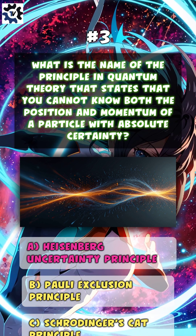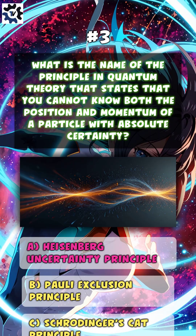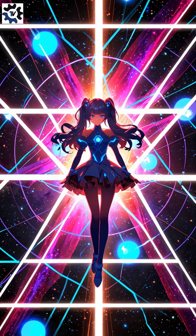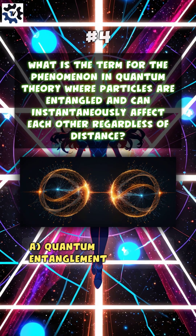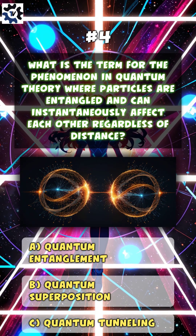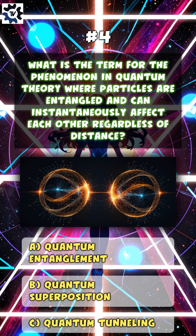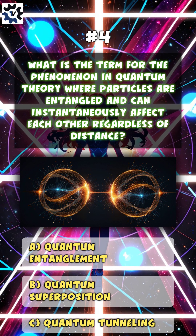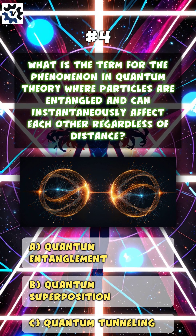The answer is A: the Heisenberg Uncertainty Principle. What is the term for the phenomenon where particles are entangled and can instantaneously affect each other regardless of distance?